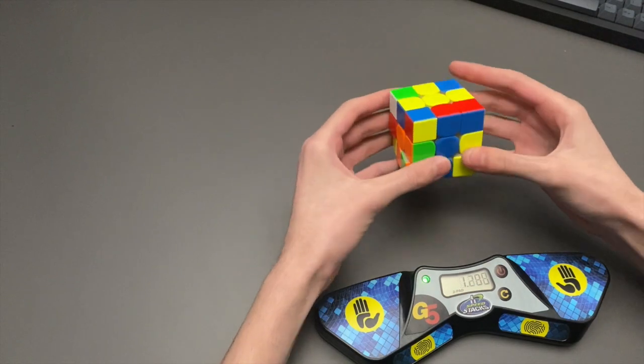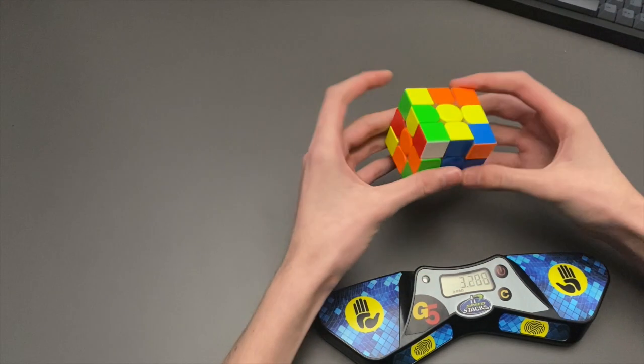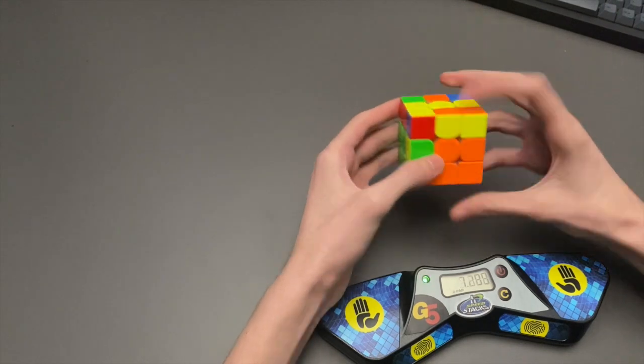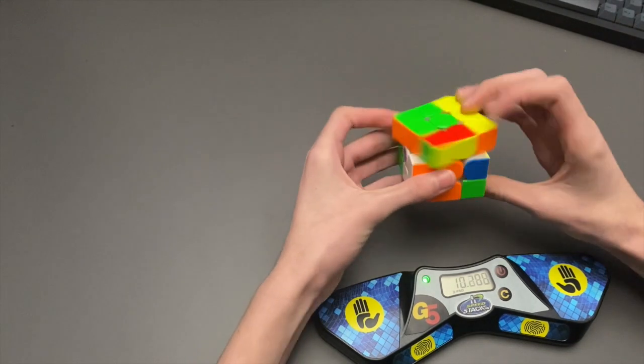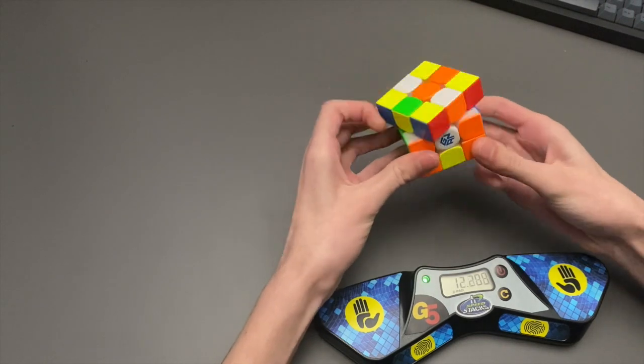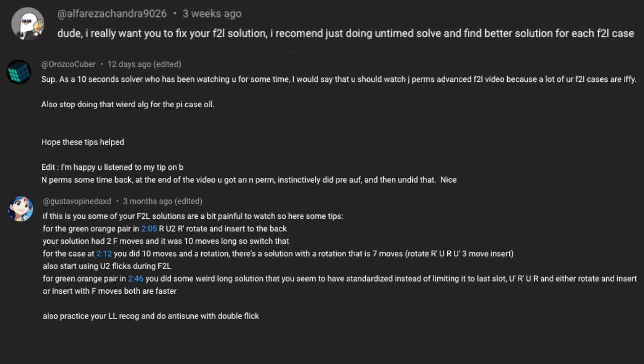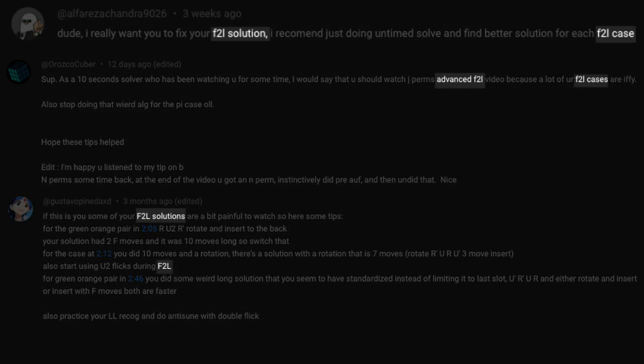This obviously isn't available to everyone, as I'm assuming that not all of you have a YouTube channel. However, you can still get critiques online via reaching out to people, and for the most part, they will be happy to help, as no one likes to see others making easily fixed mistakes. For me personally, comments like this really helped, as I didn't realize how bad my F2L solutions were until people started to inform me of my mistakes and issues.